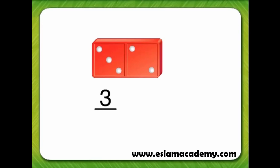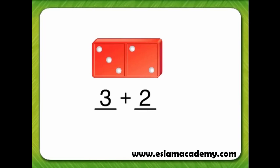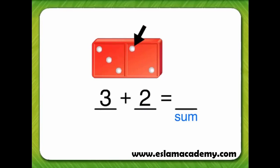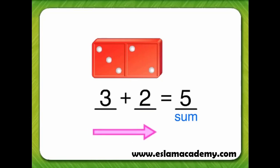How many dots are on the other end of the domino? One, two. So, two is the second addend of the addition sentence we are writing. What is the sum of three plus two? One, two, three, four, five. When we add three plus two across, the sum is five.